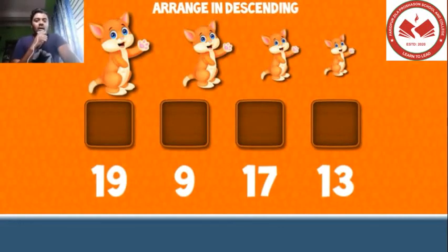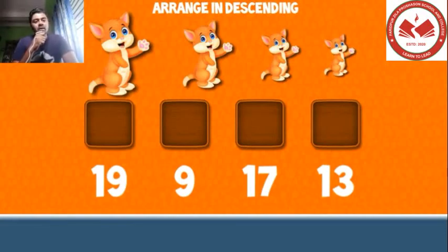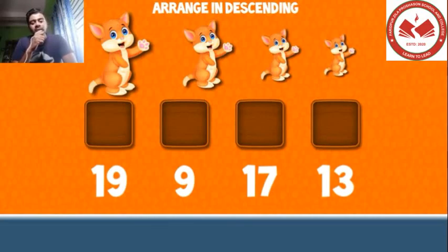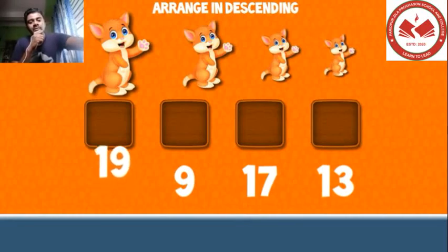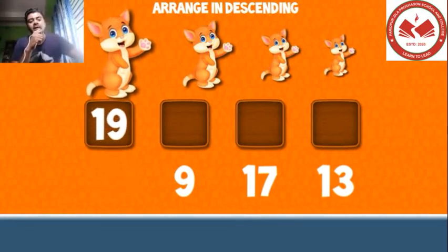Now we will complete another series. In this series we have to arrange numbers from greater to smaller. We can say that 19 is the greatest digit, so we have to put 19 in the first box to start the series.